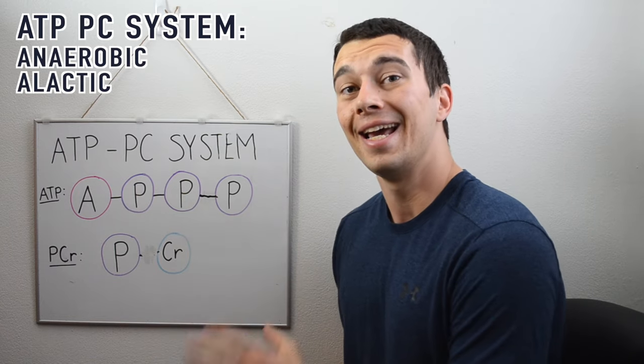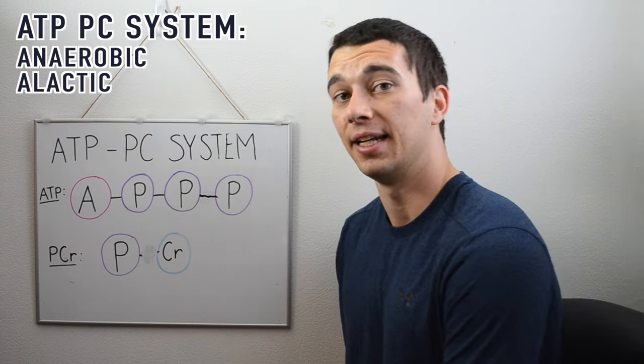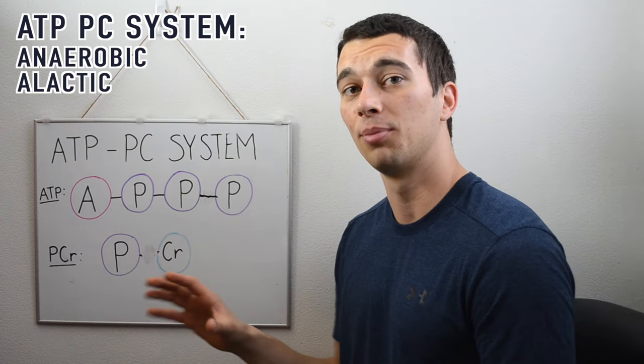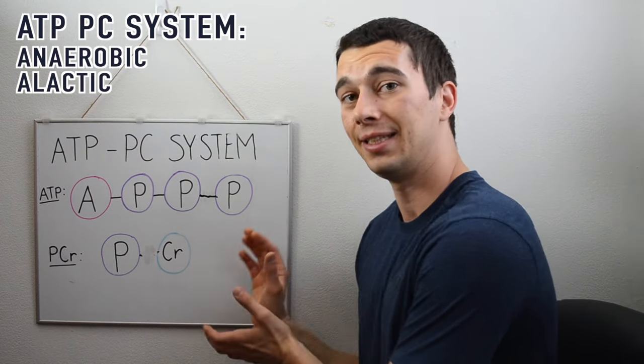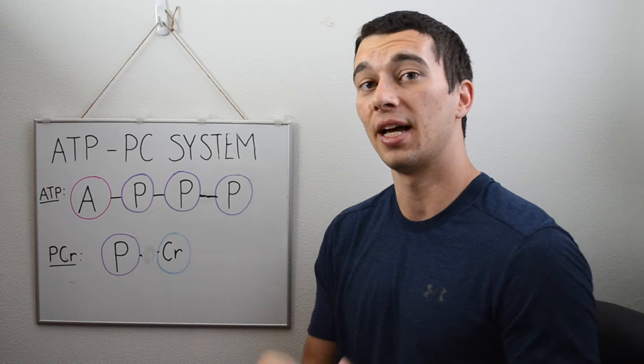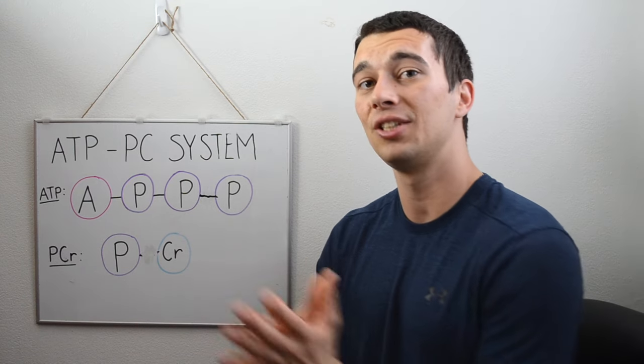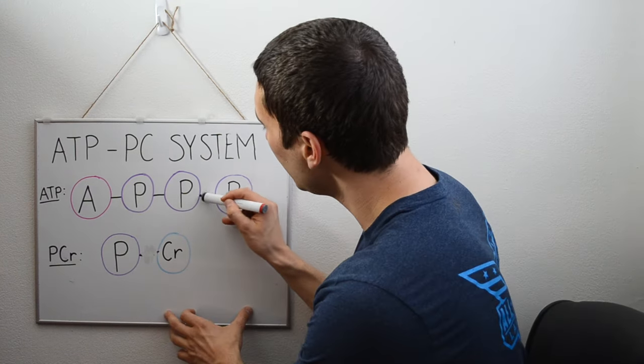There's no byproduct of lactate that's accumulating in the blood with the ATP-PC system. That anaerobic glycolysis pathway is what actually leads to lactate.